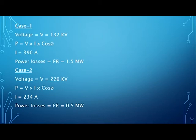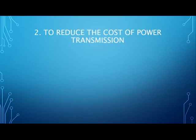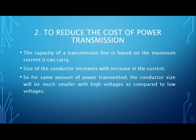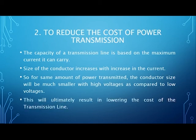The second reason behind using high voltages is to reduce the cost of power transmission. The capacity of a transmission line is based on the maximum amount of current it can carry, so the size of the conductor increases with an increase in current. For the same amount of power transmitted, the conductor size will be much smaller with high voltages compared to low voltages, ultimately lowering the overall cost of the transmission line.